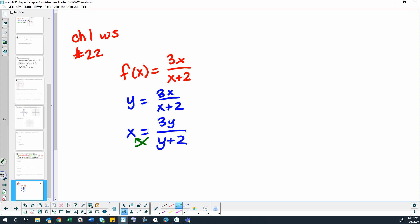So now I'm going to cross multiply both sides, so that would give me xy plus 2x equals 3y.